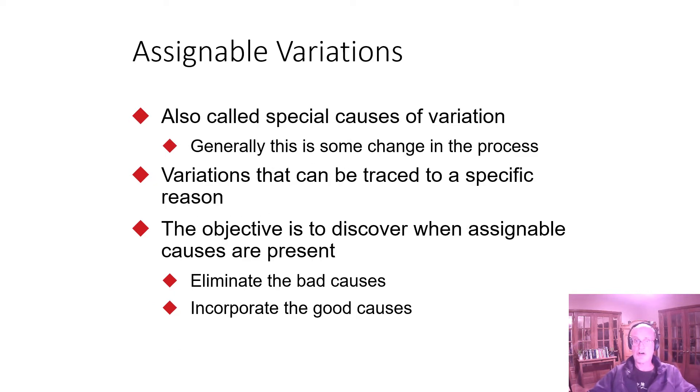Assignable variations are things that signal a change or a problem in the process. There can be assignable causes that are positive, but what they are are unusual, and we're measuring or highlighting those, and then we need to find out why they occur and eliminate the bad ones and maybe say, we've gotten better at this. Maybe we then reset the process and reset the limits so that we account for that and do that change on a consistent basis.